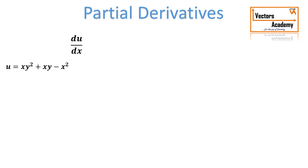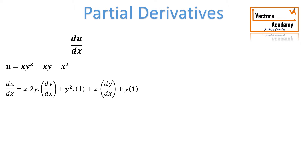Differentiating u with respect to x, the first term contains two variables x and y, so we need to apply the uv rule. That gives x into derivative of y, which is 2y dy/dx, plus y squared into derivative of x, which is 1. Remember, we are differentiating with respect to x, so whenever we take the derivative of y we get an extra term dy/dx. The next term also contains two parts, so apply uv rule: x into derivative of y is dy/dx, plus y into derivative of x is 1.